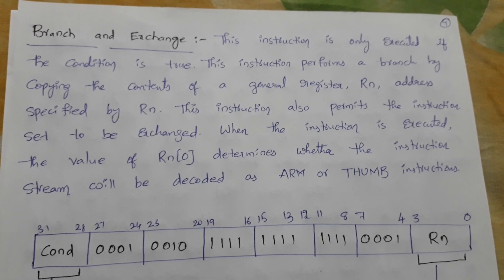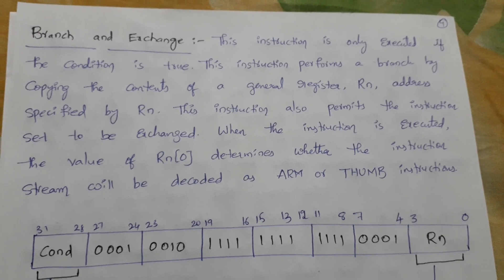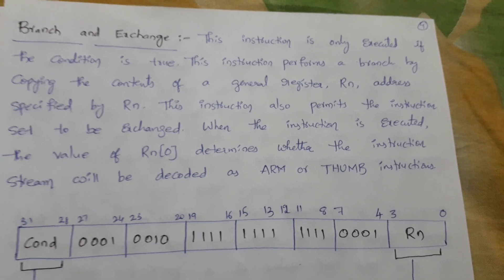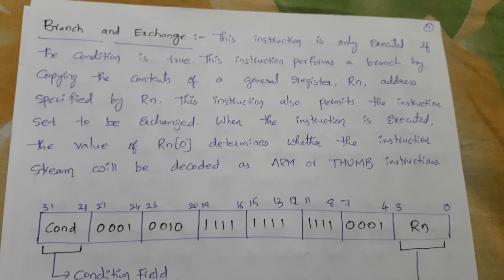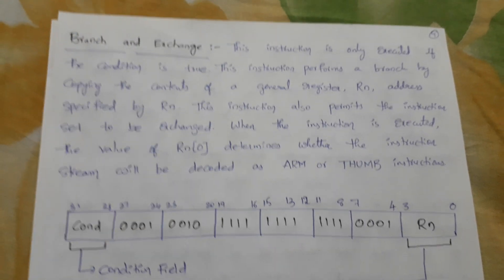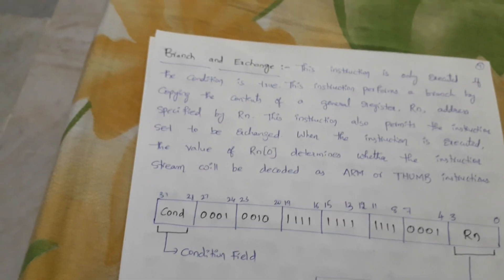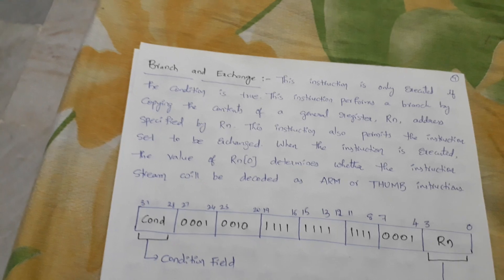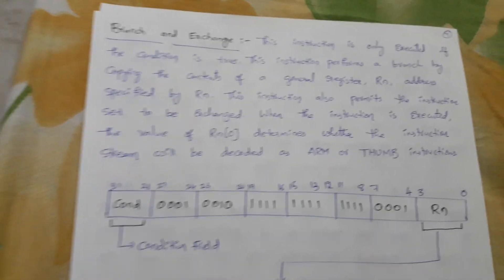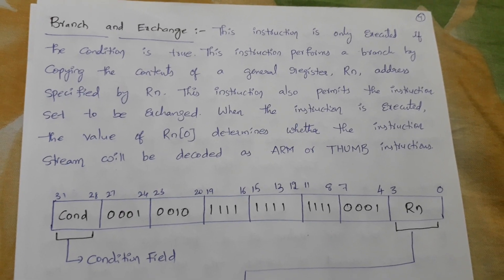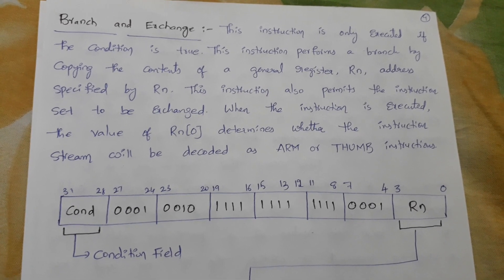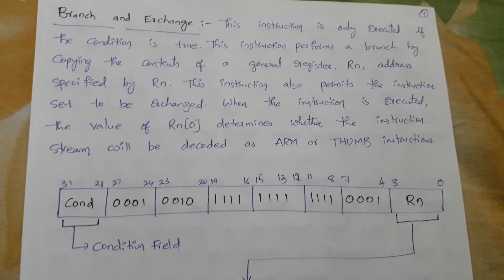Next we will see branch and exchange instructions. This instruction is only executed if the condition is true. This instruction performs a branch by copying the contents of a general register Rn to the address specified by Rn.